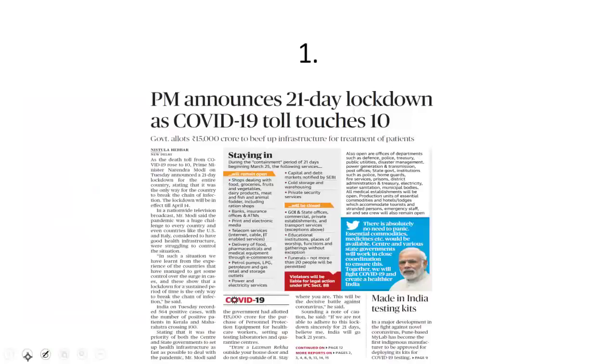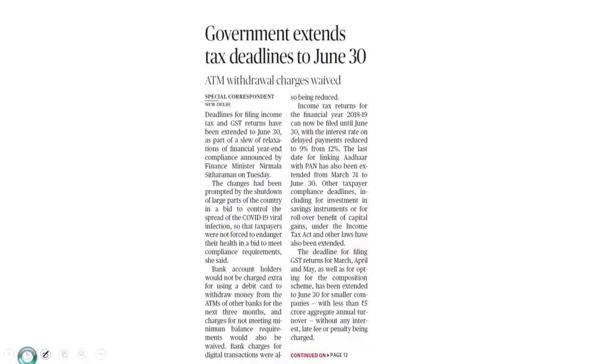Let's get started beginning with a newspaper article on page number 1 of the Delhi edition of the Hindu. Prime Minister Modi addressed the nation yesterday and announced a total lockdown for 21 days. This, Prime Minister said, is the only way to break the chain of transmission. And the Prime Minister said, if we are not able to adhere to this lockdown sincerely for 21 days, India will go back 21 years. This lockdown will be in effect till April 14. Yesterday also, the finance minister announced some steps. For example, deadline for filing income tax returns and GST returns have been extended to June 30th. Also, you can use your debit card to withdraw money from the ATMs of other banks for 3 months, without being charged for doing so. Many other steps were taken.